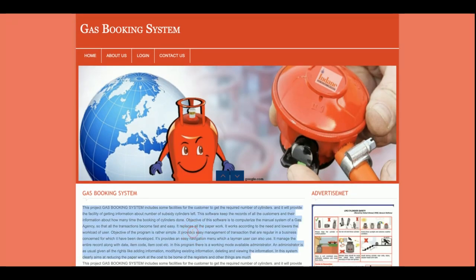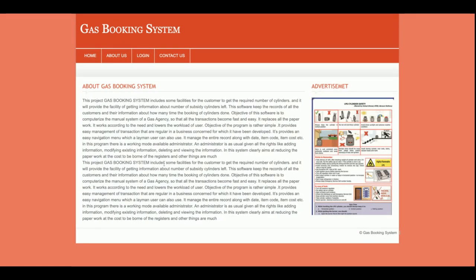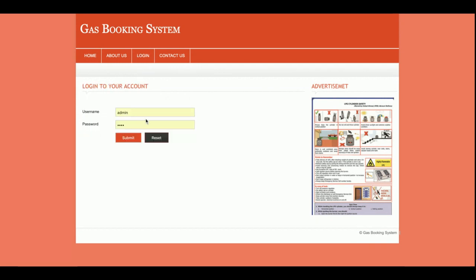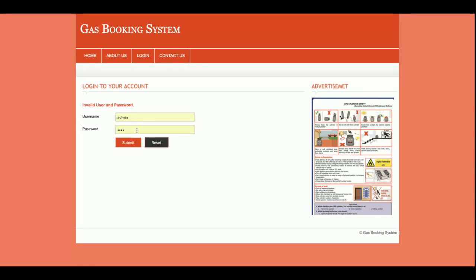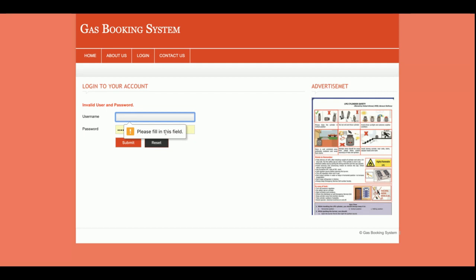This is the home page, and the content of this project you can change directly from the HTML code. This is the About Us page — also static content. This is the Login page, and the credentials are validated from the database directly. This is the Contact Us page. Once I click on the login page it will ask for user ID and password. If I enter the wrong credentials it will say 'invalid user ID and password.' If you leave a field empty it will say 'please fill in this field' — this is the jQuery validation.